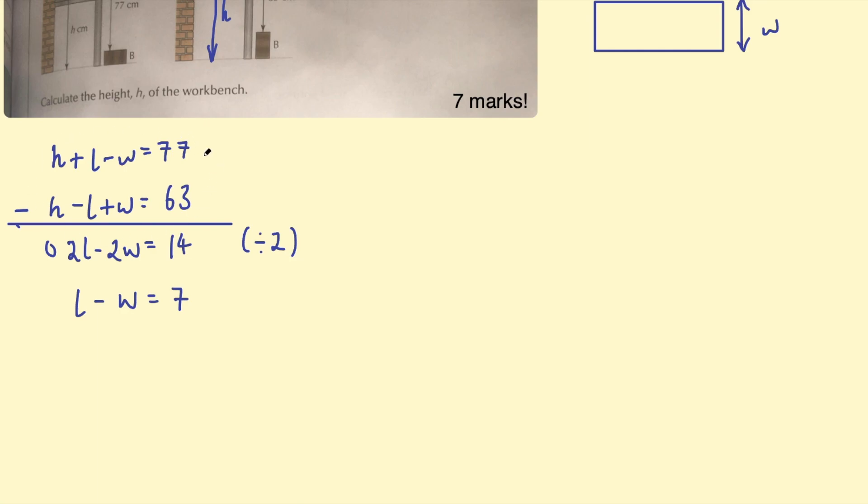All right, go back to our original equations. Do you notice this expression L take W anywhere in these equations? That's right. Hopefully you can see it. It is right here. L take W. Okay. And we're saying that equals seven. Now we can take that original equation. H plus seven equals 77. H plus seven equals 77.